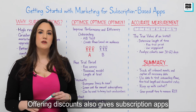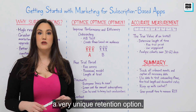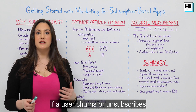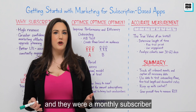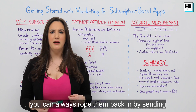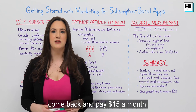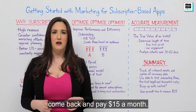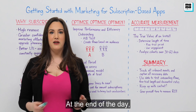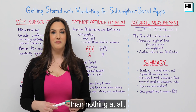Offering discounts also gives subscription apps a very unique retention option. If a user churns and they were a monthly subscriber paying $20 a month, you can always rope them back in by sending them an offer — come back and pay $15 a month. If they don't bite at that, you can offer them $10. At the end of the day, it's more important to have a user paying less than nothing at all.